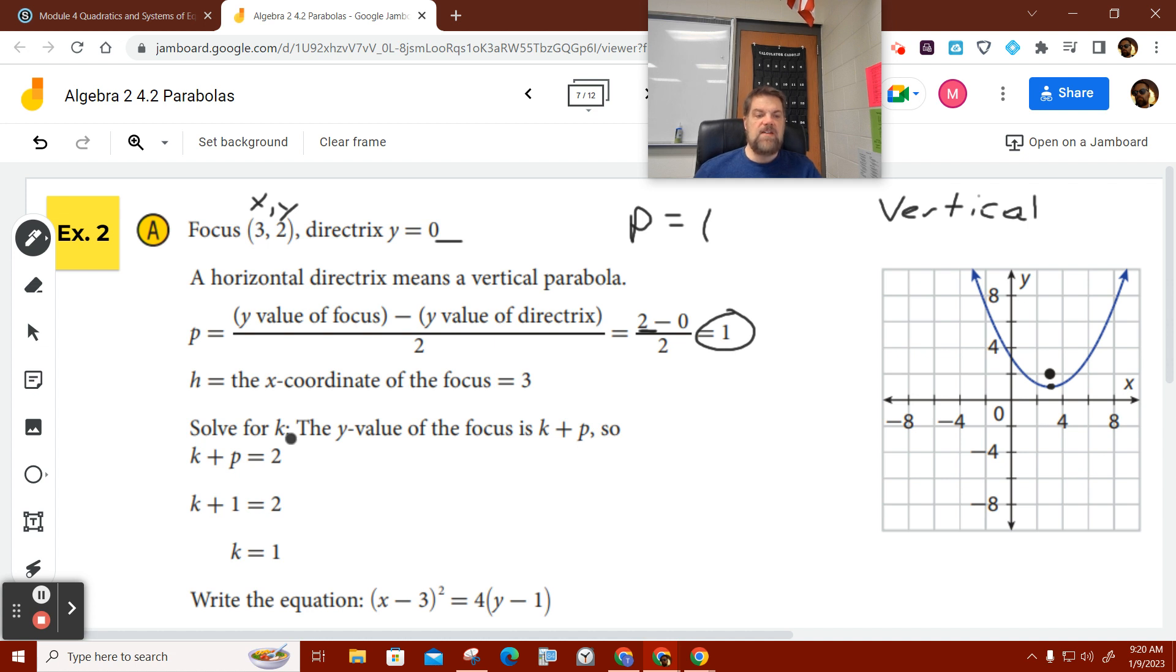And then to find K, to solve for K, the Y value of the focus is K plus P. Well, we know that K plus P equals two, right? So how do we know that it equals two? Well, the Y value equals two. The Y value of the focus is equal to K plus P. So it's like saying K plus P equals Y. What Y value? The Y value of the focus. What's the Y value of the focus? Two. Well, we know that P equals one. So something plus one equals two. Well, that means K equals one. So now we know that K equals one. We know that H equals three. We have all the information that we need to write the equation.